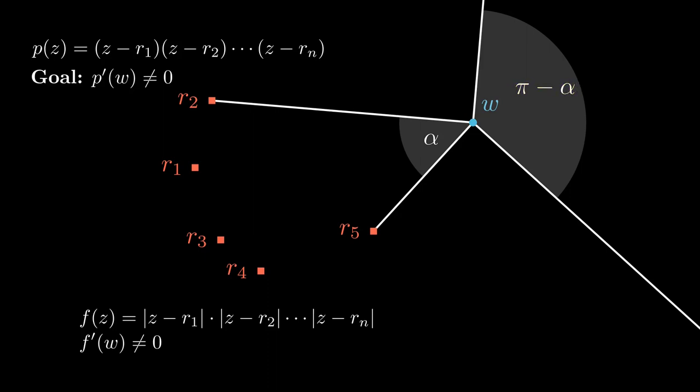which means there's a vector that is in all of the half spaces, which means that f prime at w is not zero, which means that p prime of w is not zero, which is exactly what we wanted to show. We did it.